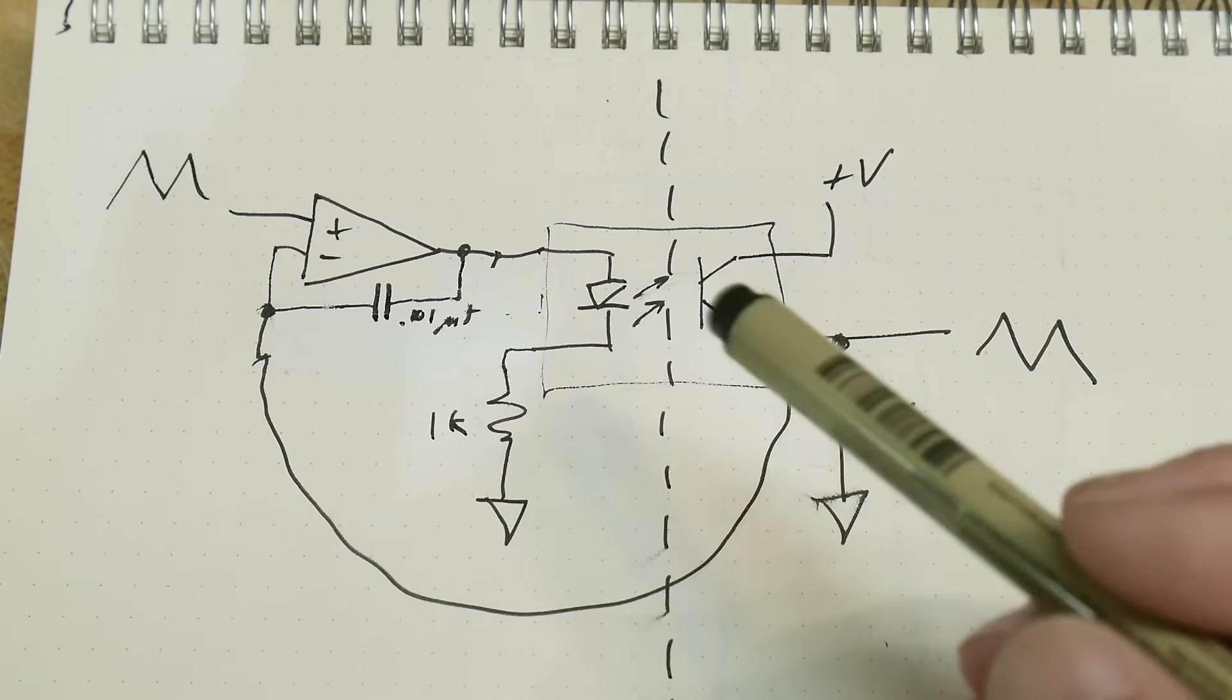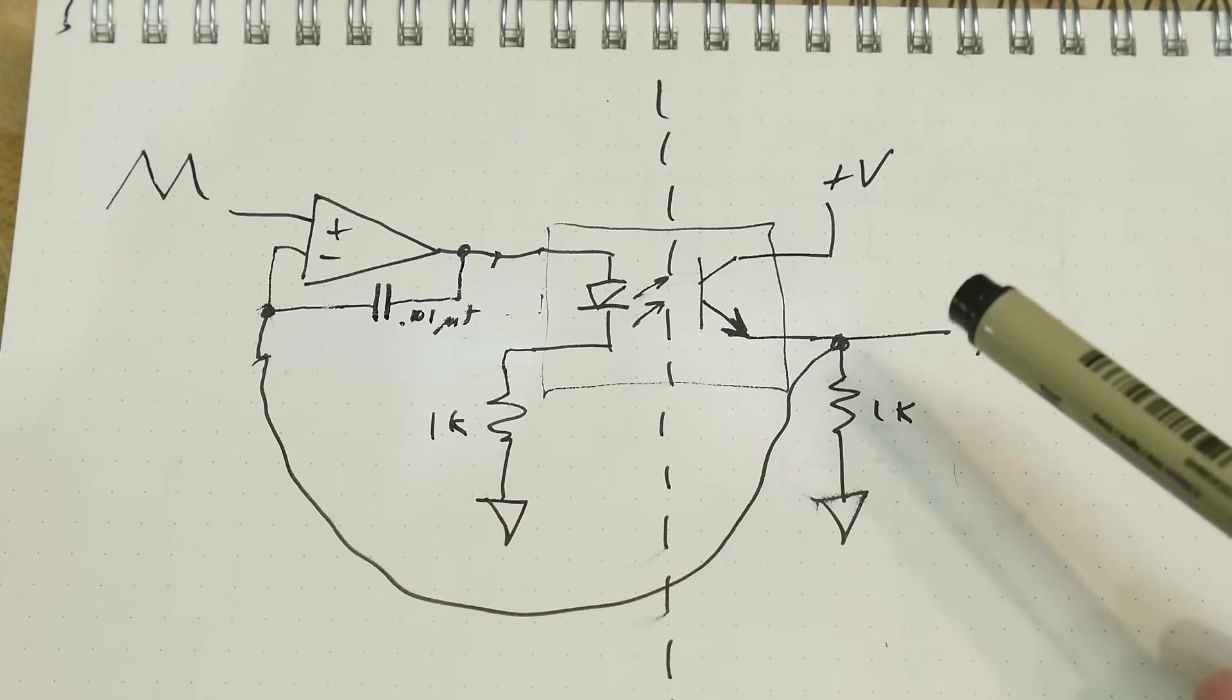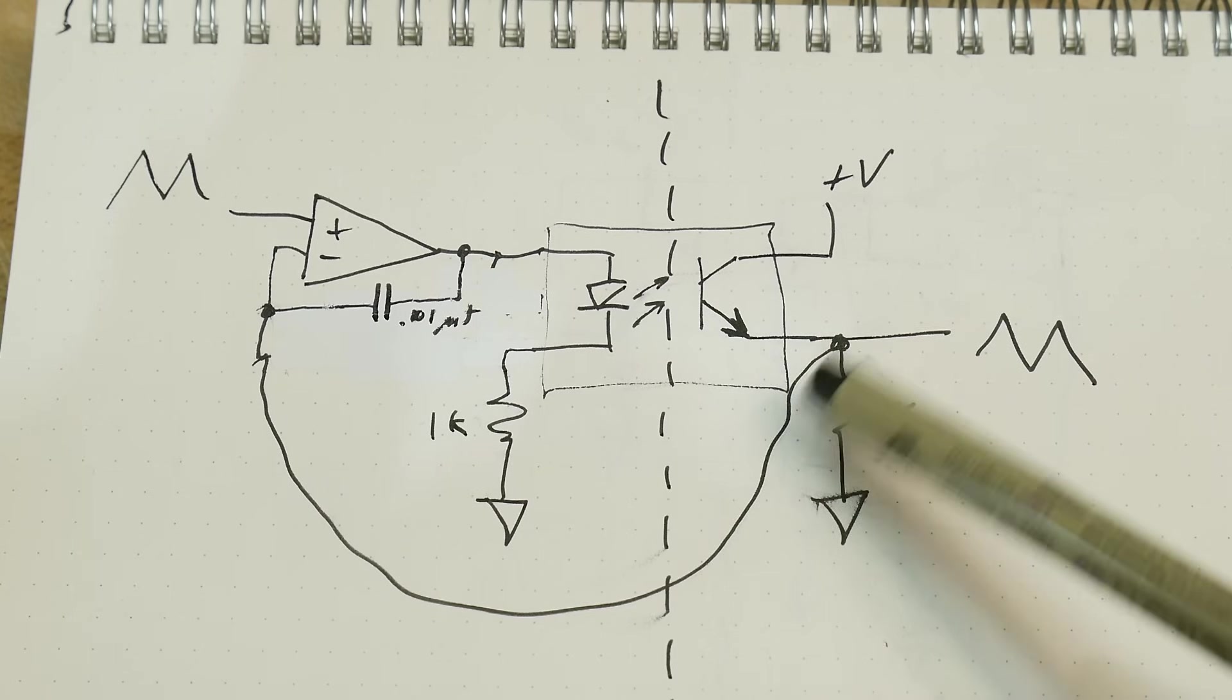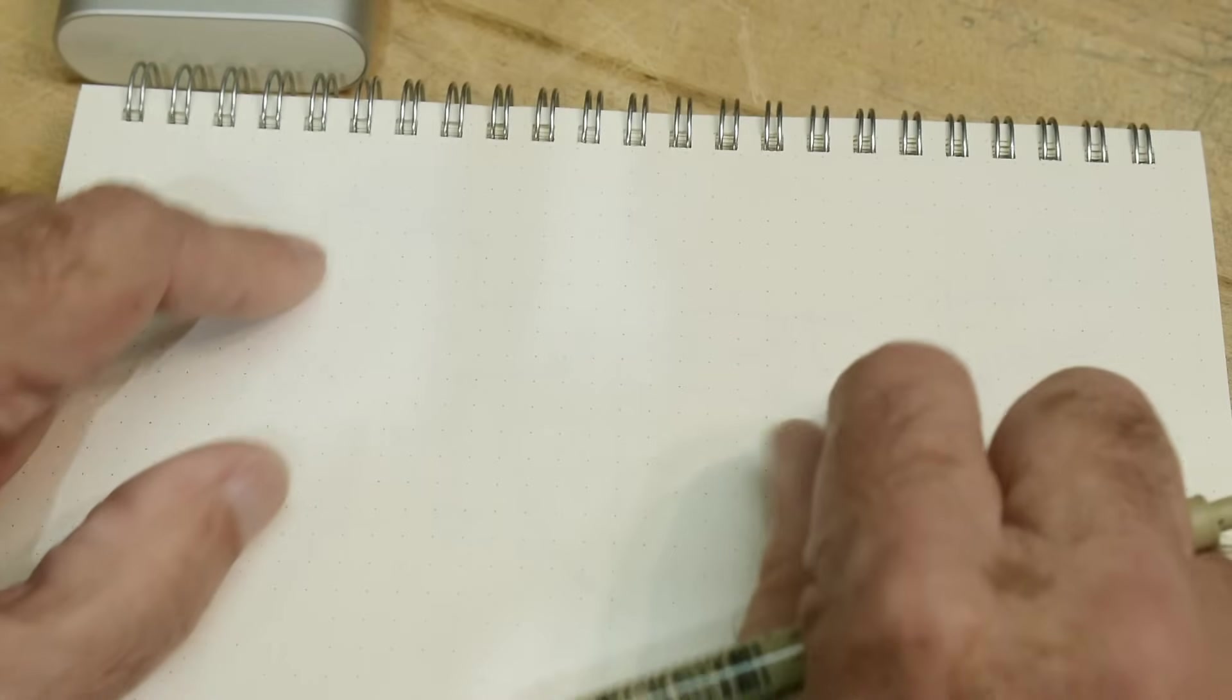Now we need to fix the problem of this wire. This wire goes across the high voltage boundary. We have a wire going from the high voltage side to the non-high voltage side. We need to figure out some way of getting rid of that wire.